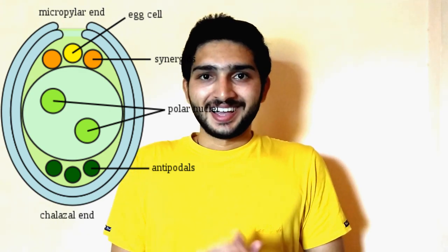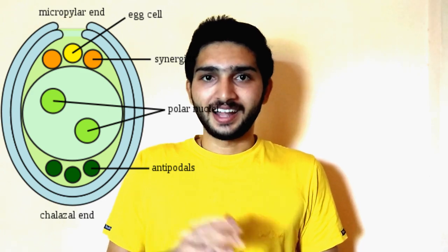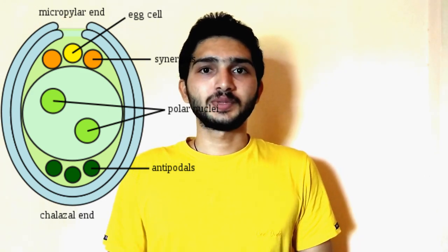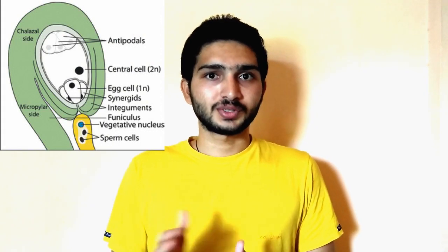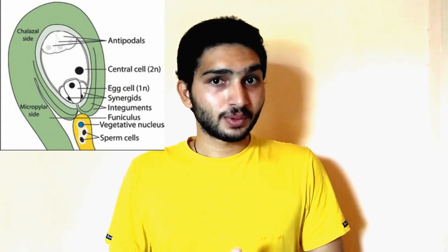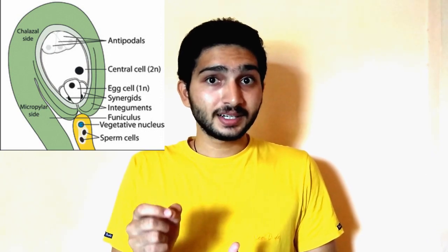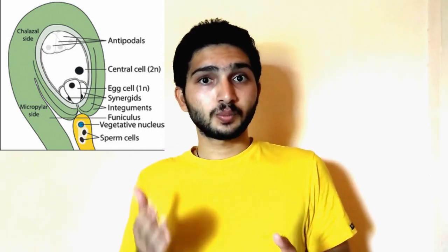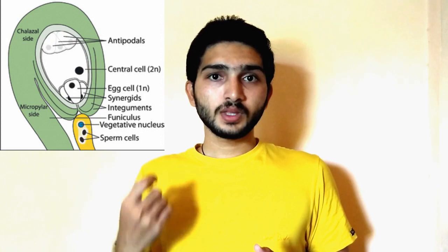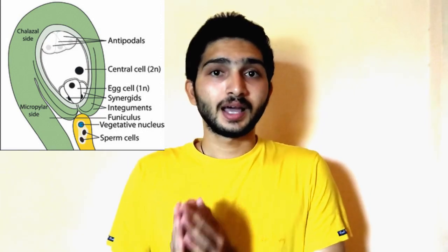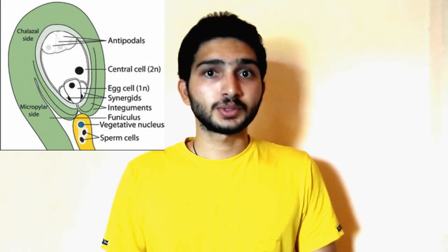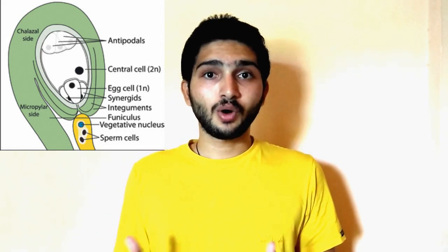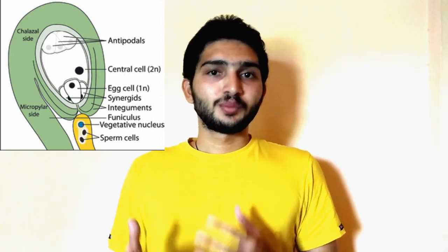When the pollen tube enters into the embryo sac, it is guided from the micropylar side, that is from the anterior side. It enters into the central cell — the two migrated cells that form the central cell — and matures. This pollen tube then develops into endosperm, after which cell division takes place and the embryo sac is completed.